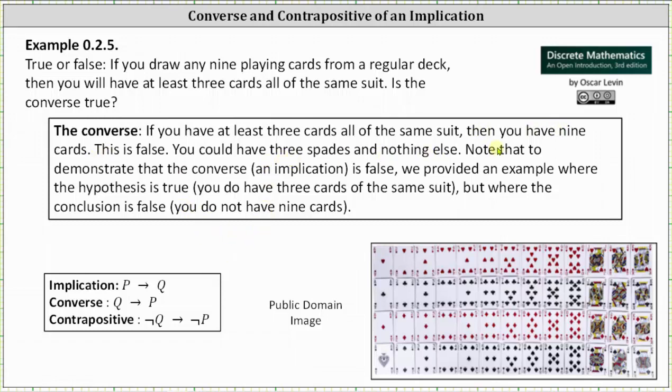You could have three spades and nothing else. Note that to demonstrate that the converse which is an implication is false we provided an example where the hypothesis is true, meaning we have three cards of the same suit, but the conclusion is false, meaning we do not have nine cards.